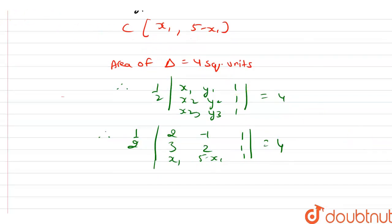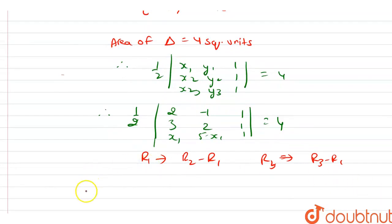Using row operations R2 → R2 - R1 and R3 → R3 - R1, the determinant becomes (2, -1, 1), (1, 3, 0), (x1-2, 6-x1, 0). This equals 8 since half the determinant equals 4.